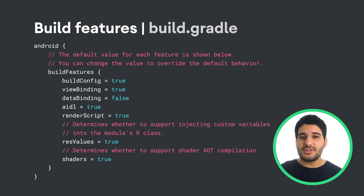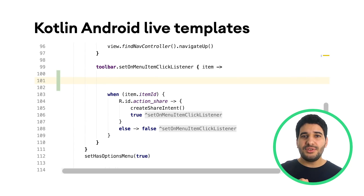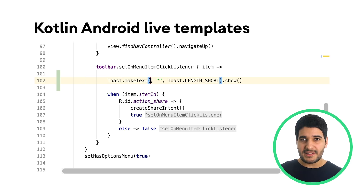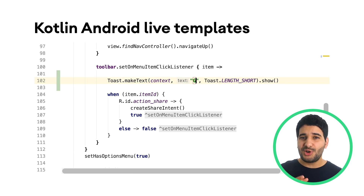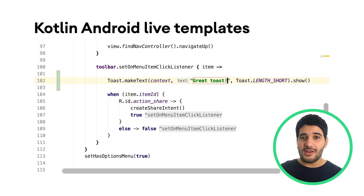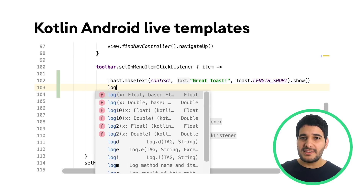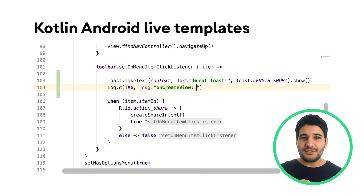You can set the options for each module in the module-level Build Gradle file. Android Studio now includes Android Live templates for your Kotlin classes. For example, you can type 'toast' and press the Tab key to quickly insert a toast, and similarly for a log. For a full list of available live templates, navigate to Editor > Live Templates inside your settings.